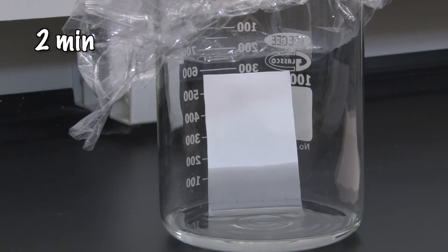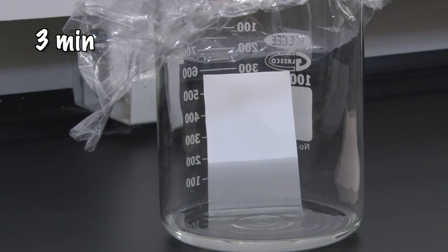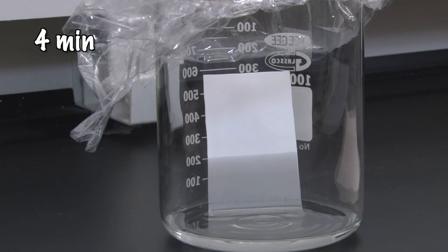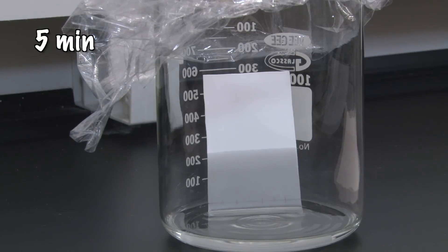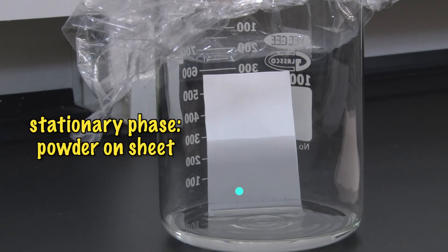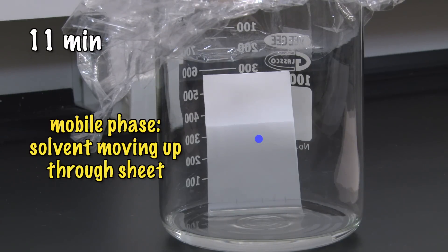The solvent will slowly wick up through the sheet, carrying the applied samples along with it, but different substances climb the sheet at different rates. Some substances are more attracted to the stationary phase, the powder on the sheet, so they'll travel slowly. Some are more attracted to the mobile phase, the solvent, so they'll travel more quickly.